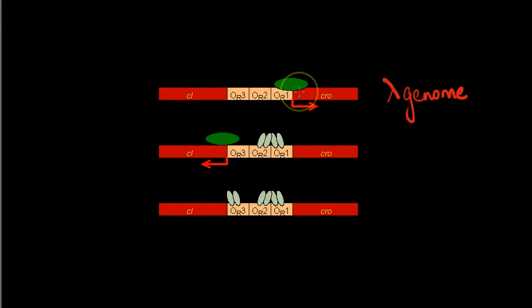When the CRO gene is transcribed, it will result in the phage moving towards the lytic phase.